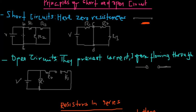Looking at the first circuit, from B to C it's a short circuit because we have no resistance on it. BC is a short circuit, but the rest are regular connections because they have resistances on them. In the second example, we also have a short circuit because it has no resistance — it has zero resistance.